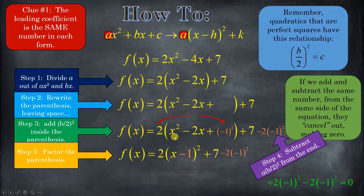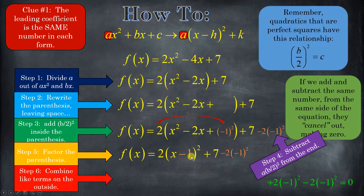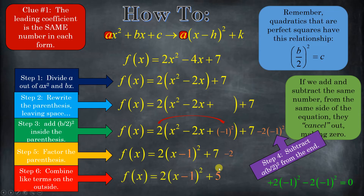Step 6: we're going to combine like terms on the outside. x minus 1 squared is x squared minus 2x plus 1. So over here we're going to multiply: negative 2 times 1, because negative 1 squared is 1. And 7 minus 2 is 5. Done and done.